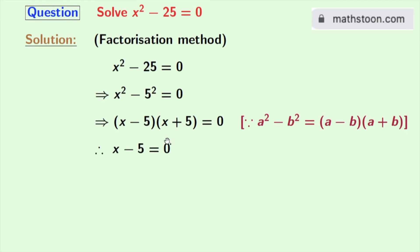So either x minus 5 is equal to 0, or x plus 5 is equal to 0. From this we get x equal to 5, and from this we get x equal to minus 5. So x equal to 5 and minus 5 are the solutions of the equation x square minus 25 is equal to 0.